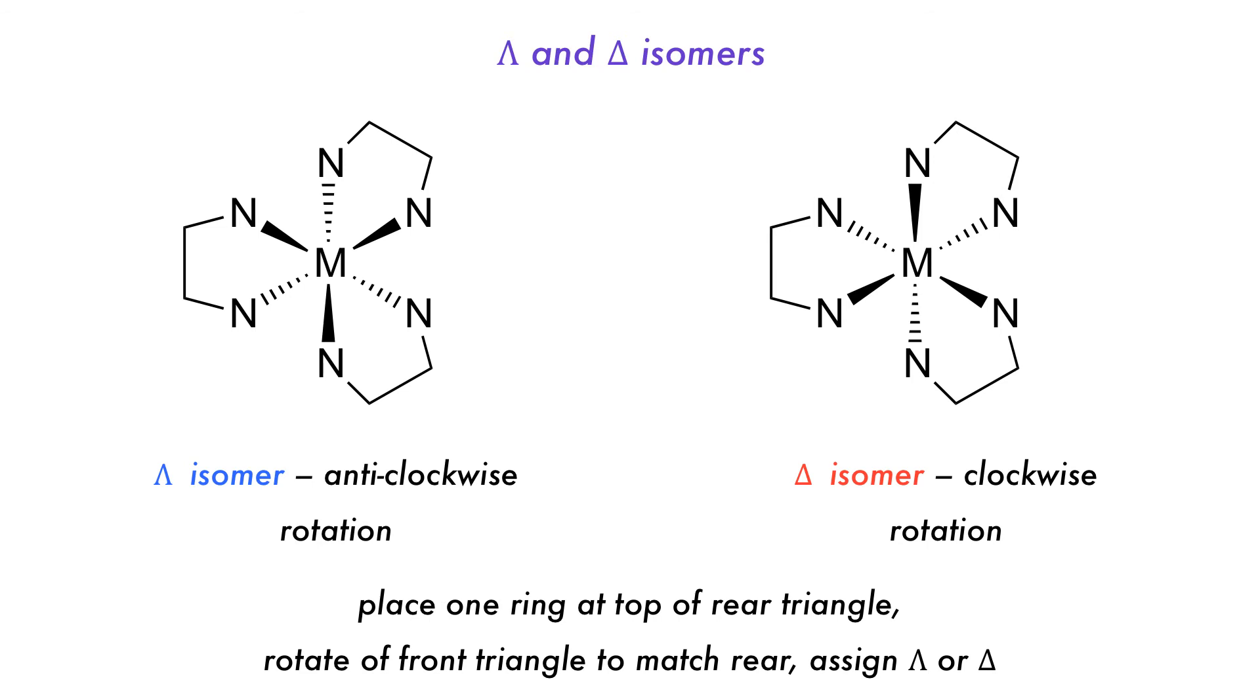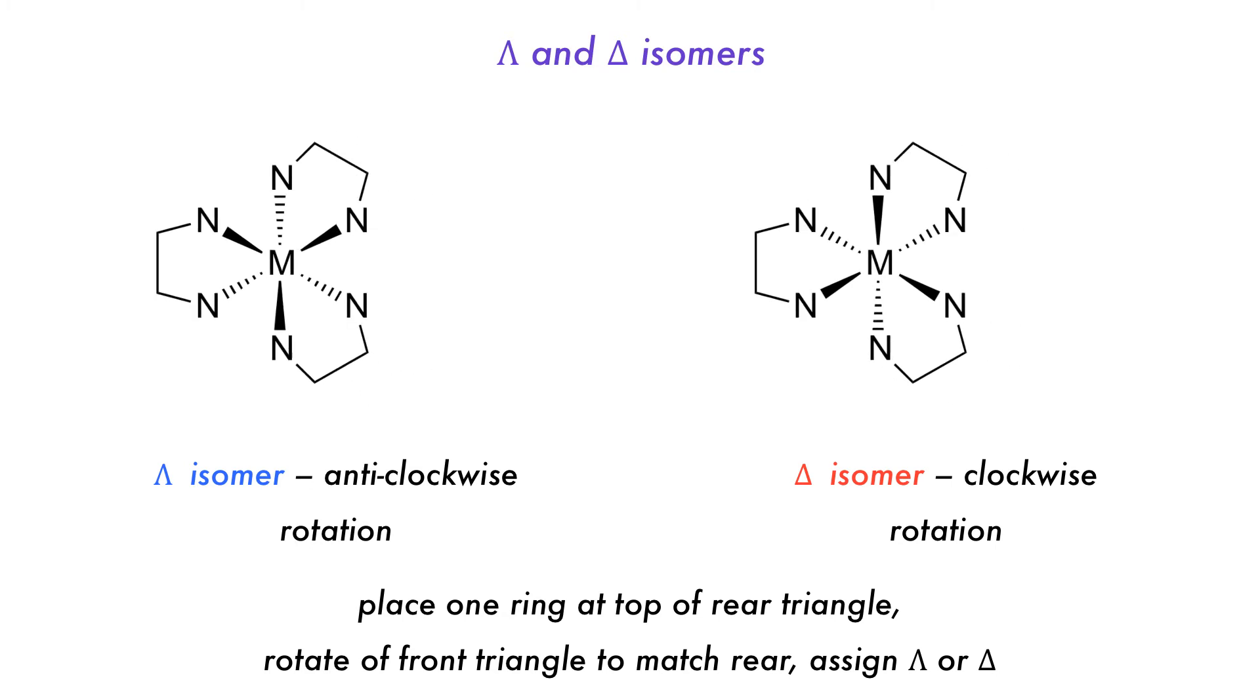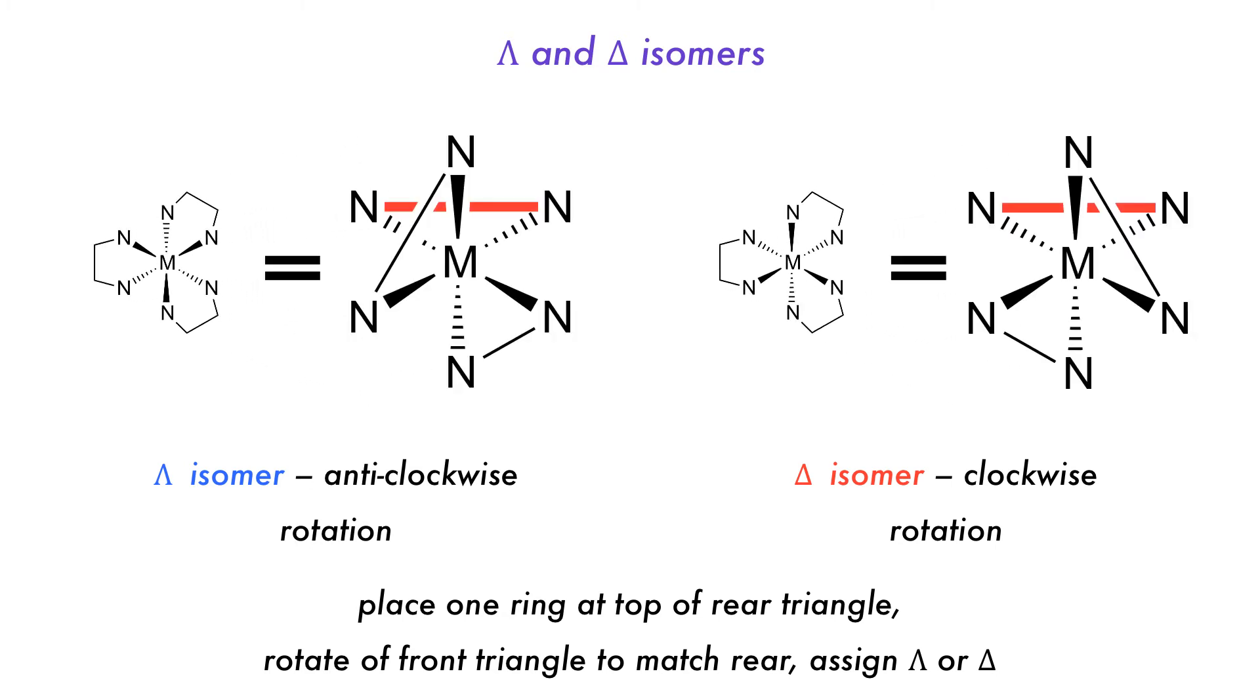A method to aid in this designation is to position the chelate ring in the horizontal plane as the top of the back triangle. Then determine the direction of rotation for the front triangle to match the rear triangle. If it is anti-clockwise, then it is the lambda isomer, and if it is clockwise, it is the delta isomer.